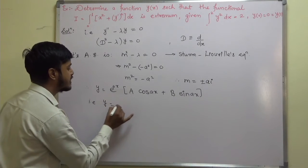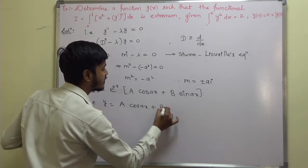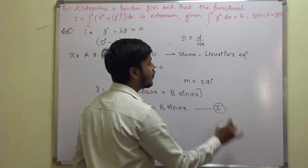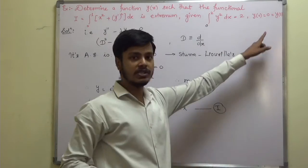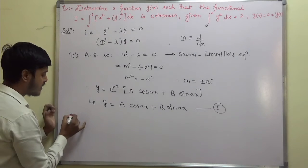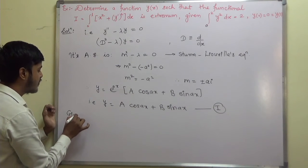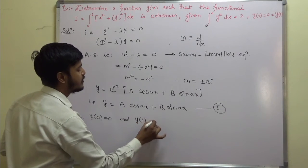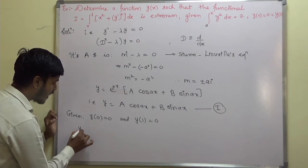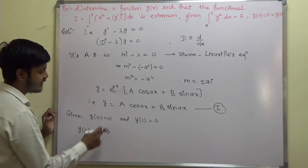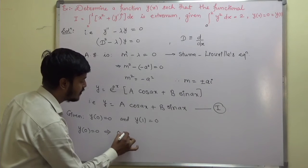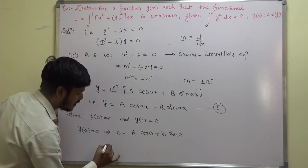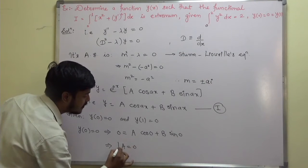Now we apply the given boundary conditions to find the constants. Given y(0) equals 0 and y(1) equals 0. Applying y(0) equals 0: putting x equals 0 and y equals 0 gives 0 equals A cos(0) plus B sin(0), which is 0 equals A times 1 plus B times 0. This implies A equals 0.